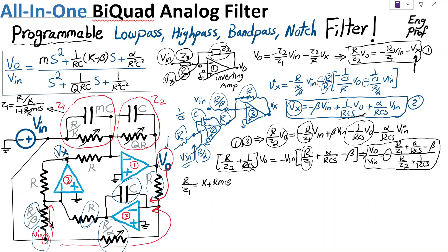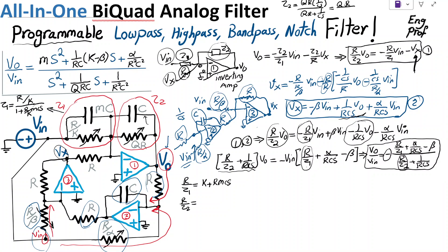Similarly for Z2, we have C and QR in parallel, giving Z2 = QR·(1/CS) / (QR + 1/CS). Therefore R/Z2 simplifies to 1/Q + RCS.